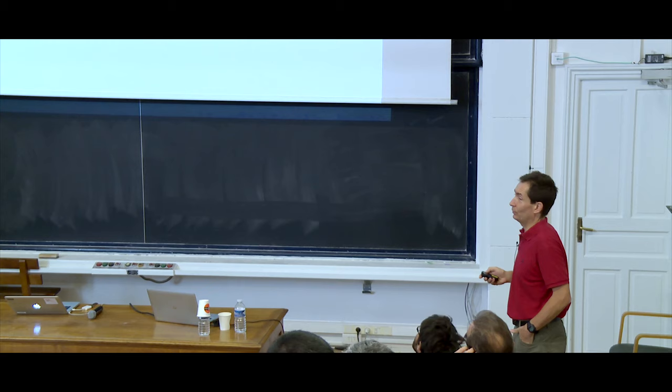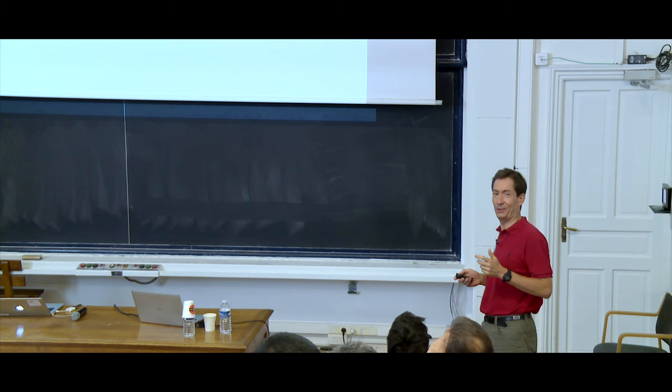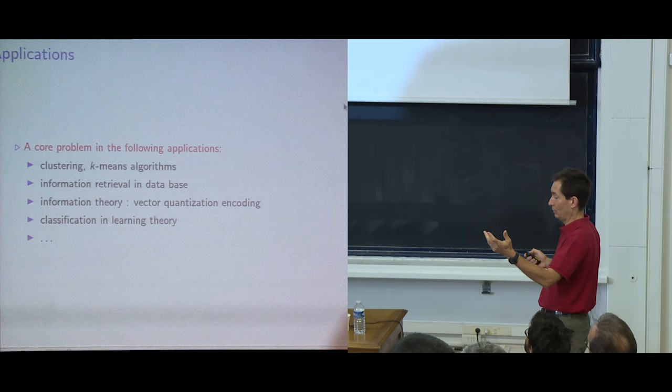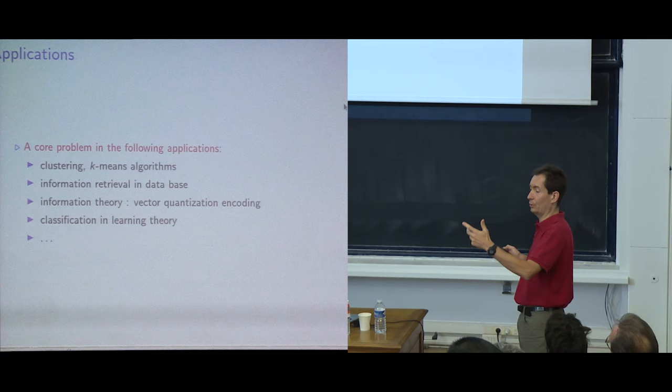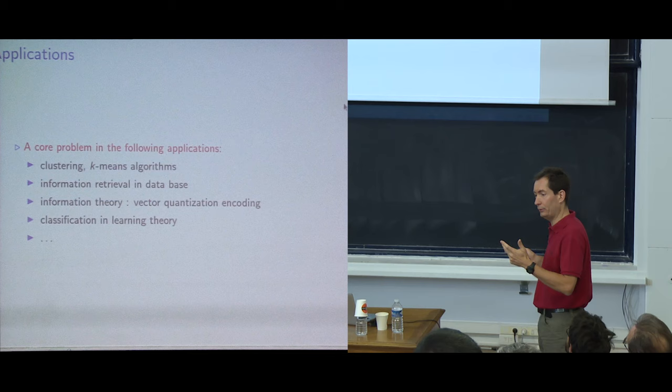How many of you have already faced the problem of running nearest neighbor queries in some space? Quite a few, maybe one third of the audience. You may have encountered this for clustering algorithms — typically to figure out, for a given point (i.e., the encoding of an object, the feature vector describing it), you need to compute distances between points coding objects.